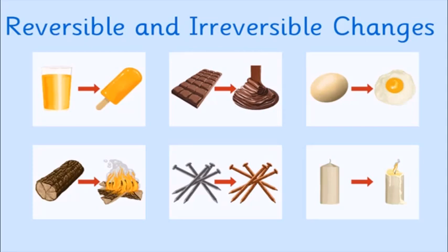An example of a reversible change is the melting of wax — when a candle wax melts, the liquid wax can again turn back into solid form, so it is reversible. Stretching of a rubber band or a spring is also a reversible change, as it returns to its original shape.